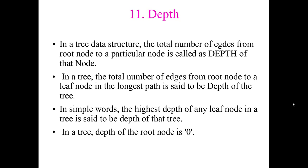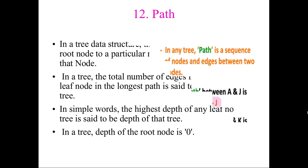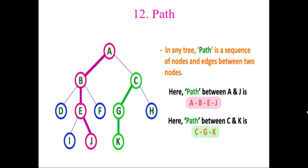You might ask: why are there no edges from a node back to itself? In a tree structure, that is not possible. However, in a graph structure — which is an upcoming topic — there can be an edge connecting a node to itself. You will understand that when we cover graphs.